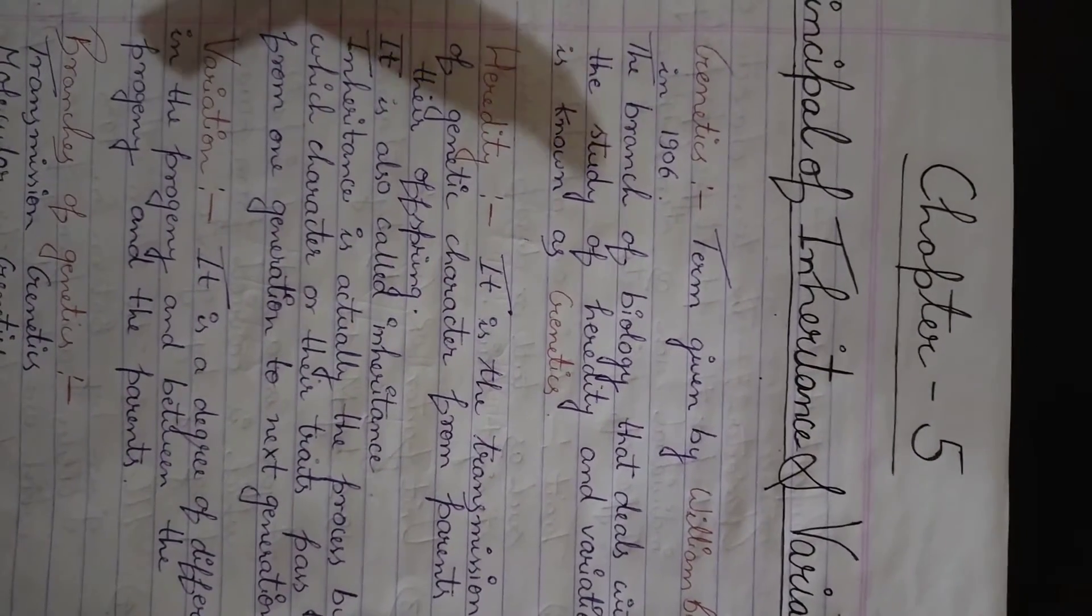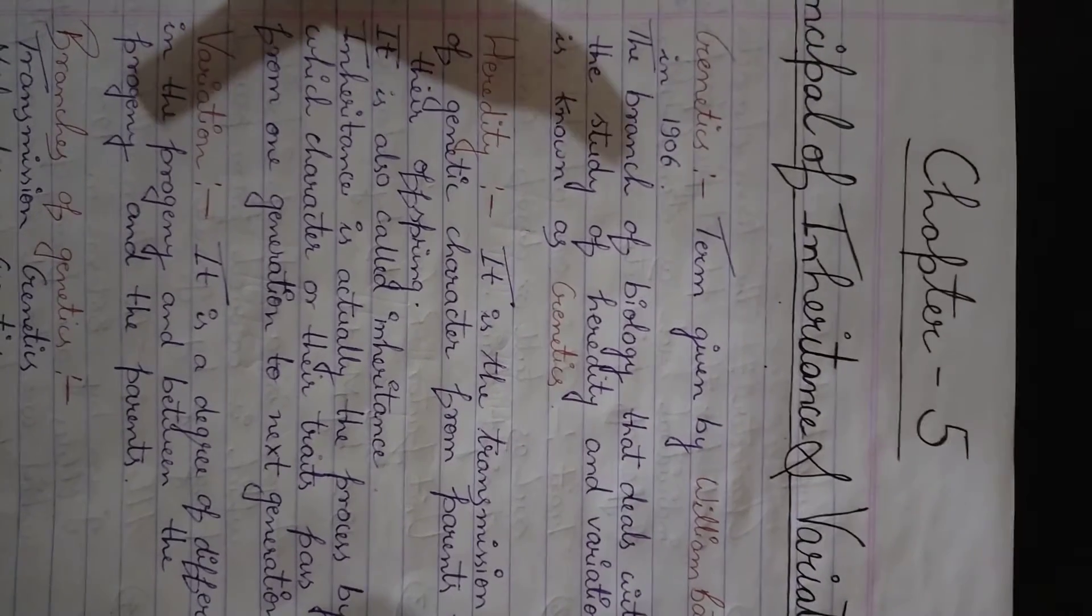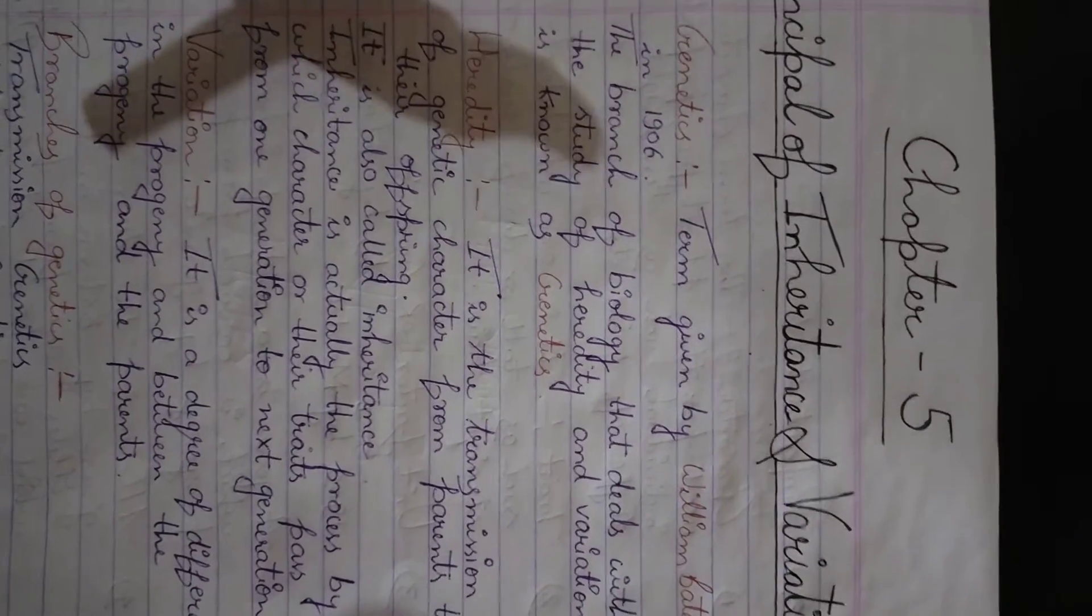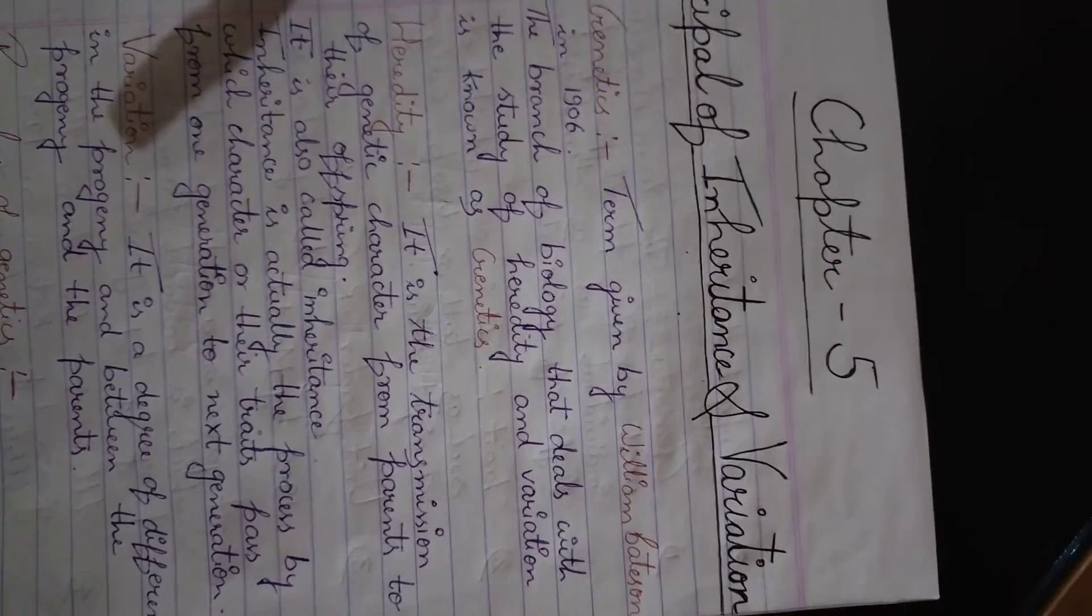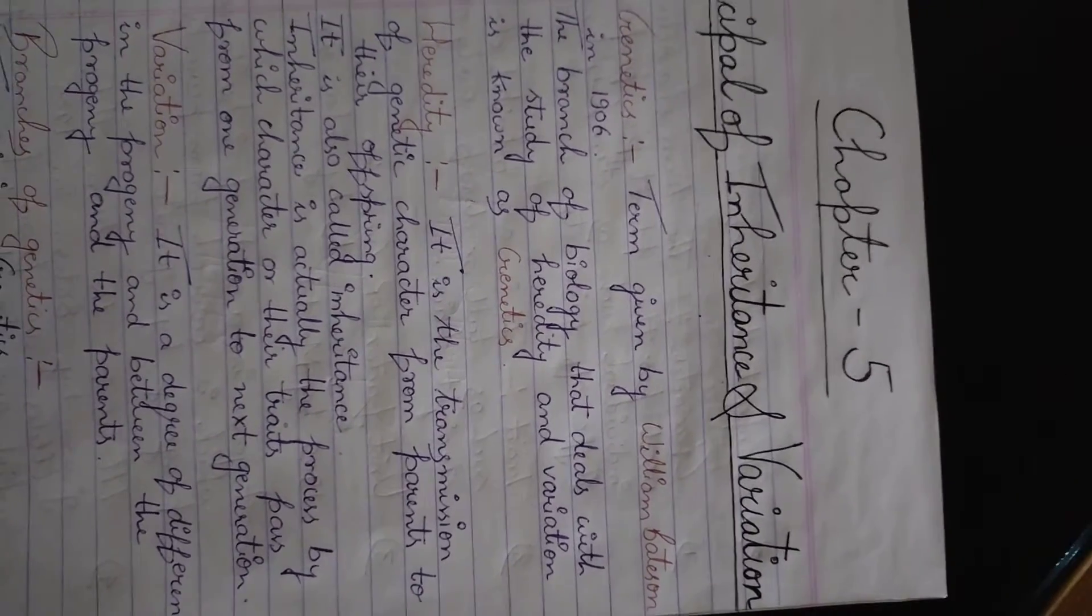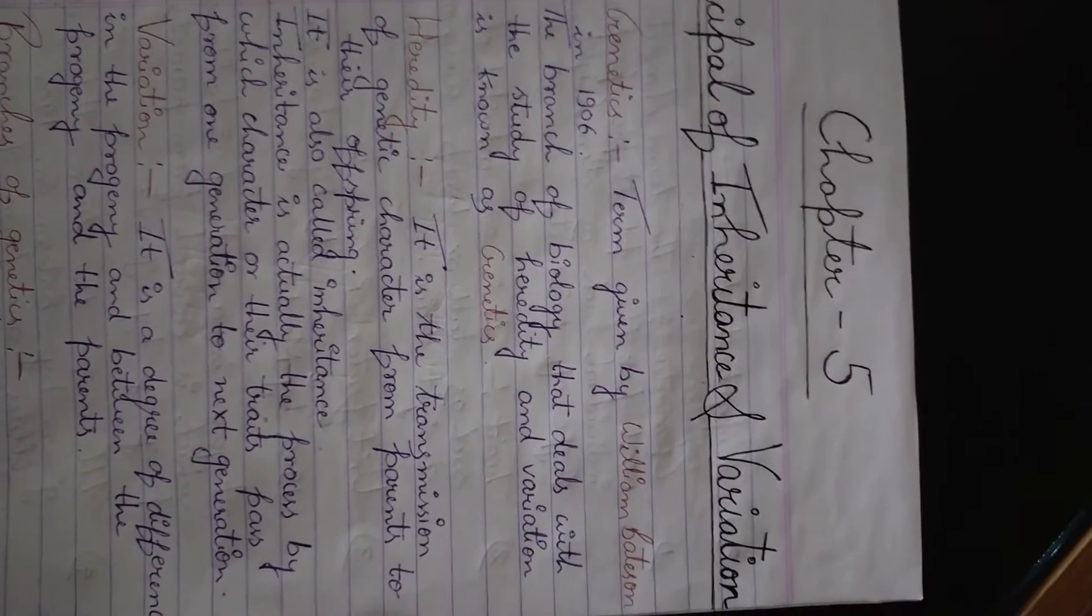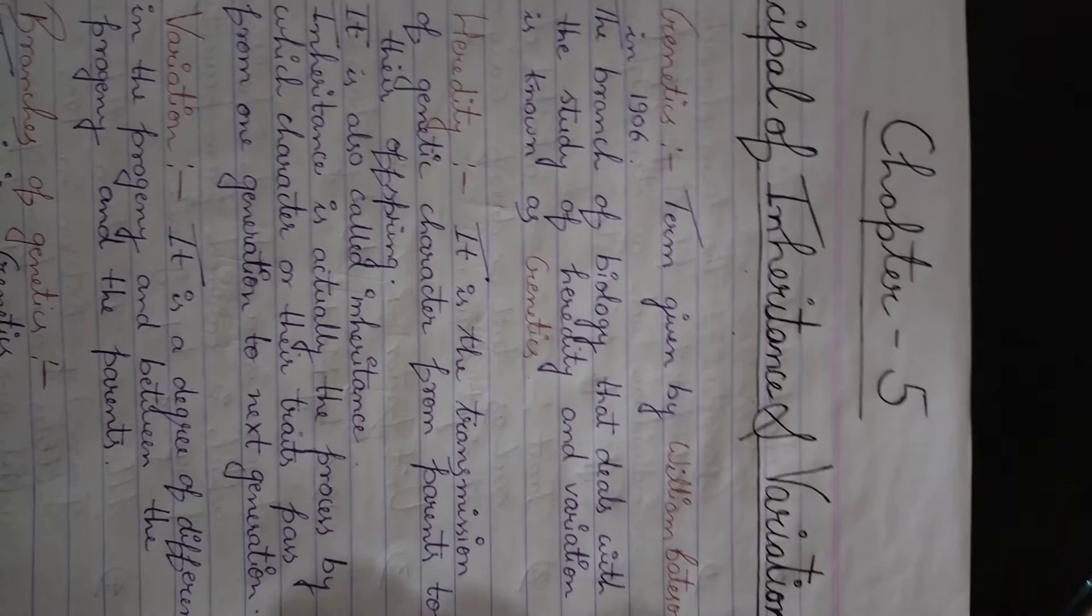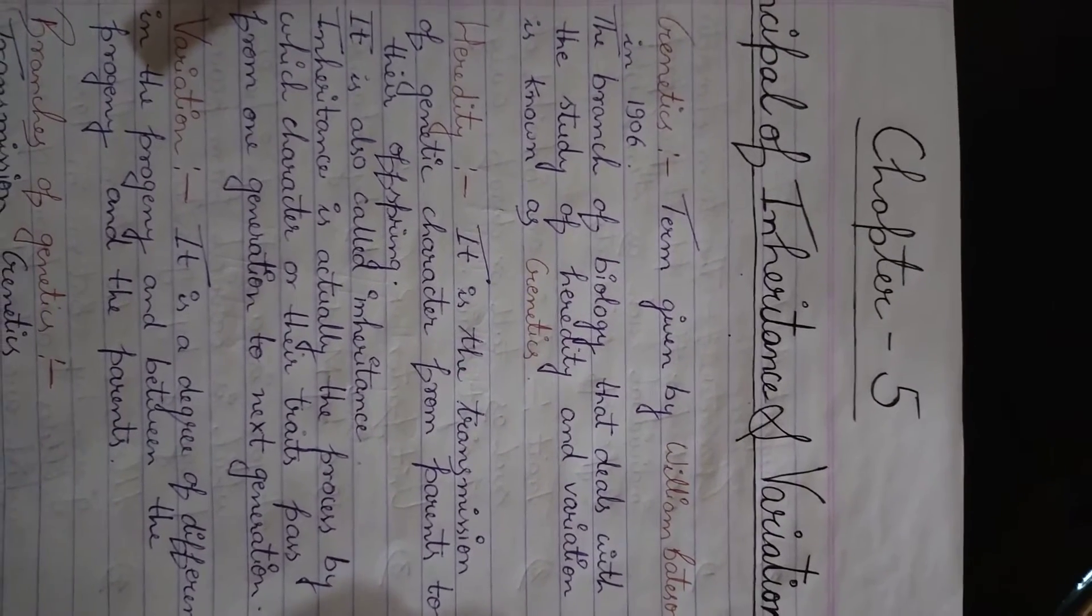Now next is variation. So in spite of similarity there are also differences, like variations within the species. Like every individual in our family or in our neighborhood, we can easily distinguish except identical twins. We can easily identify each other. Why do we do it? Because our father is different, our mother is different, our neighbor is different. So we can easily identify each other.